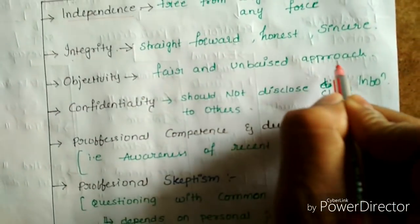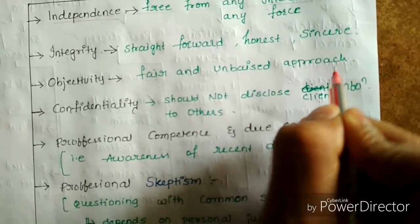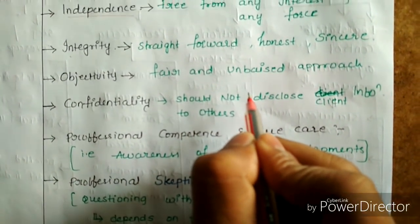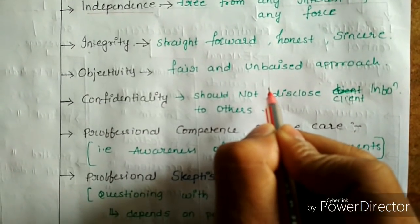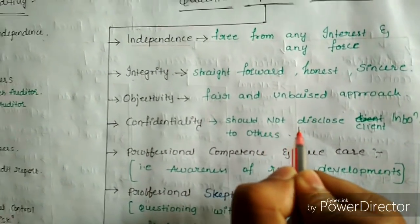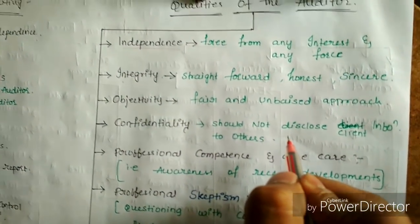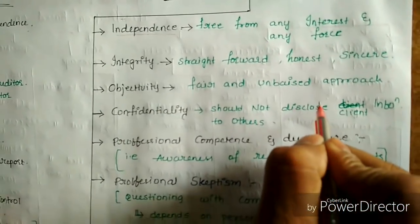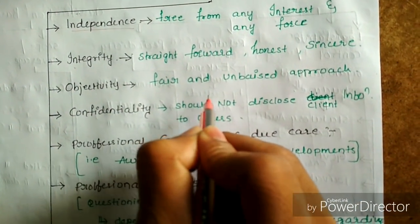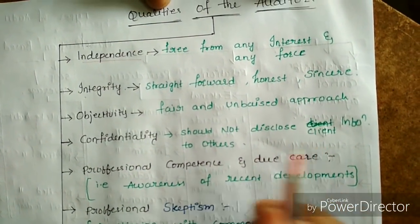Objectivity: fair and unbiased approach. The auditor should not have a biased approach because in auditing, a biased approach creates scope for fraud in the audit. It will reflect badly on the management and company, and the company may even be going for winding up.